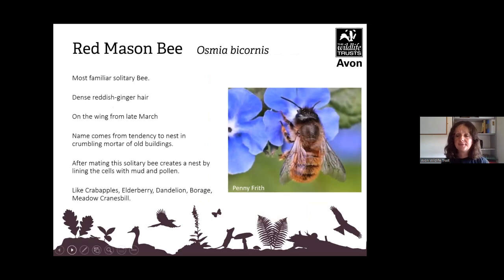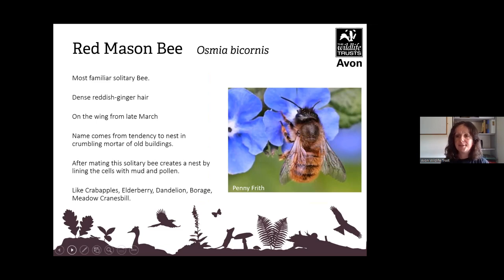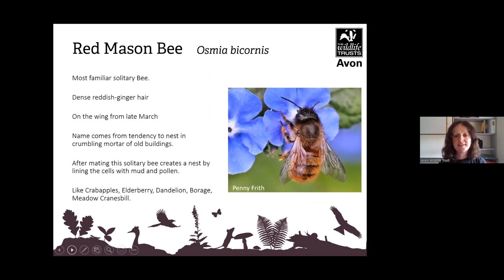The red mason bee, Osmia bicornis, is the most familiar solitary bee. They have dense reddish-ginger hair and are on the wing from late March. The name comes from their tendency to nest in crumbling mortar in buildings. After mating, this solitary bee creates a nest by lining the cells with mud and pollen. They like crab apples, elderberry, dandelion, borage and meadow cranesbill.